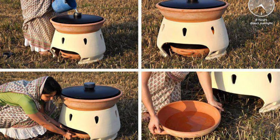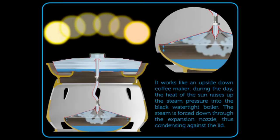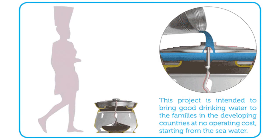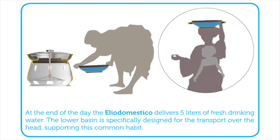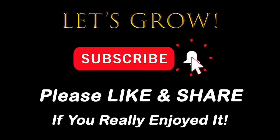And finally, Number 10: Solar Still. It works by filling a black kettle with salty water in the morning and then closing the lid. As temperature and pressure increase, the steam is forced down through a connecting tube and accumulates in the lid, which acts as a condenser, transforming the steam into fresh water. Many thanks for watching, and please don't forget to subscribe. And remember: reduce, reuse, and recycle.